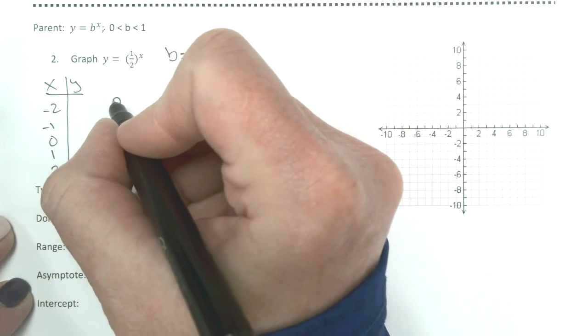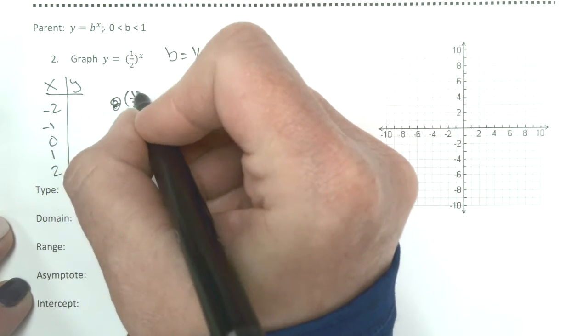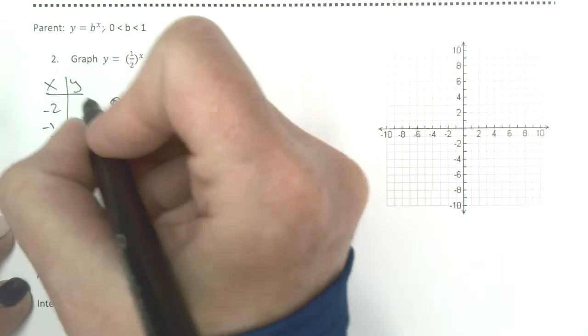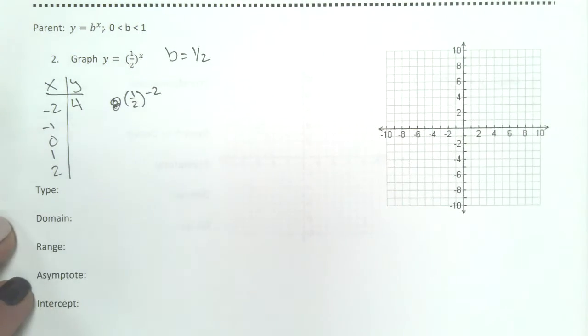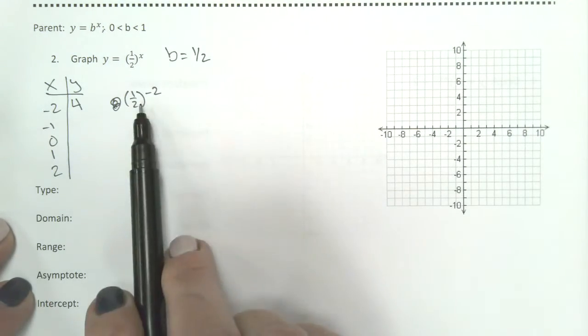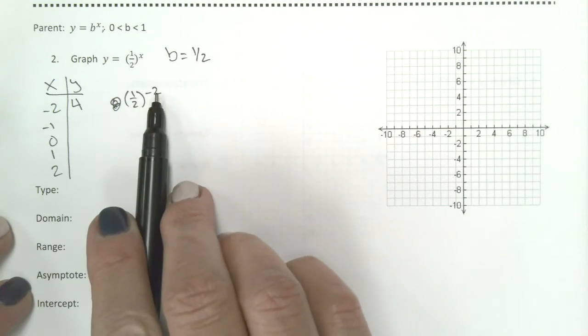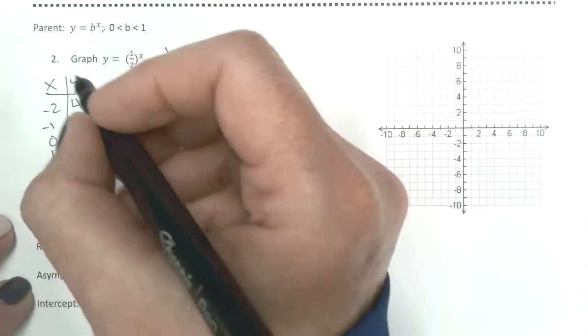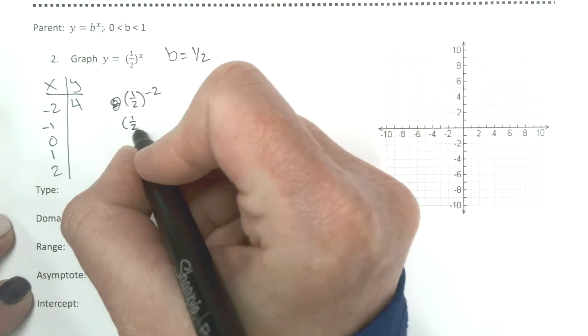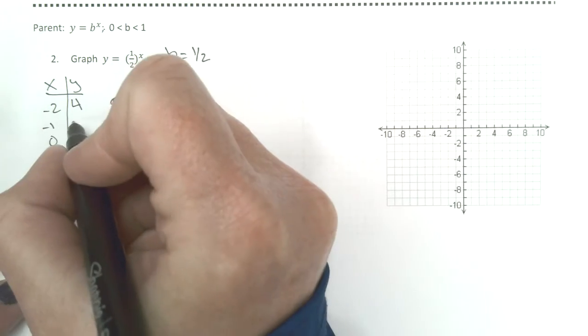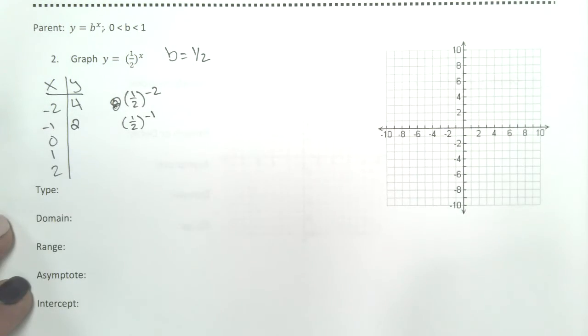If you put 1 half to the negative 2 in your calculator, it will tell you that it is 4. And it is because of these laws of negative exponents. If you put 1 half to the negative 1 in there, it is 2.